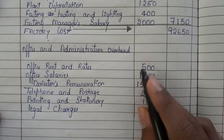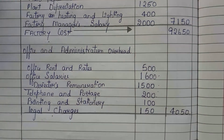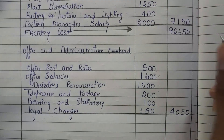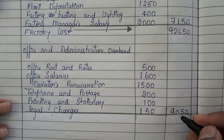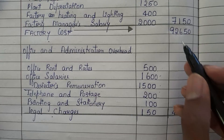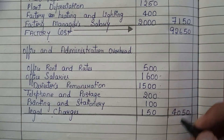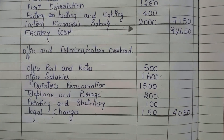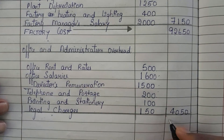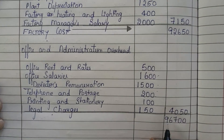Now add 92,650 with 4,050. You will get 96,700. What is this 96,700? It is nothing but the cost of production.